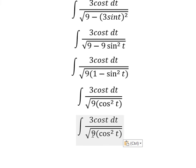So this one we change for cos t squared. The square root of 9 cos t squared, you get 3 cos t.